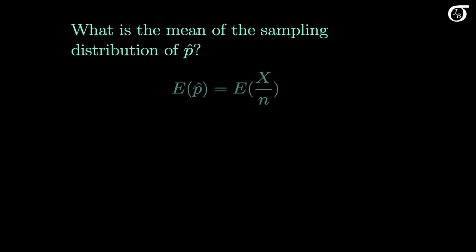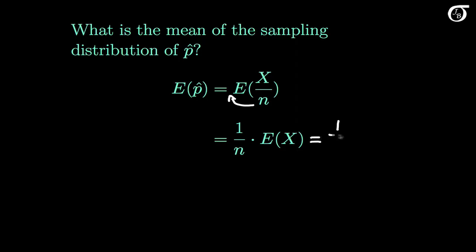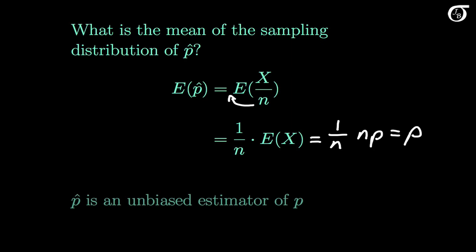What is the mean of the sampling distribution of P-hat? The mean or expectation of P-hat is the expectation of x over n. Recall that when we multiply a random variable by a constant, the expectation gets multiplied by that constant, so we can take 1 over n out in front of the expectation. Since the expectation of x is n times p, this equals 1 over n times np, which is simply equal to P. On average, the sample proportion equals the population proportion, and so P-hat is an unbiased estimator of the population proportion P.